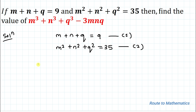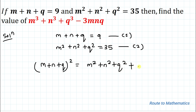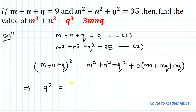We use the algebraic identity: M plus N plus Q, whole squared, equals M squared plus N squared plus Q squared plus 2 times the quantity MN plus MQ plus NQ. From equation 1, M plus N plus Q equals 9, so the left side is 9 squared equals 81. From equation 2, M squared plus N squared plus Q squared equals 35, so we substitute that value in.